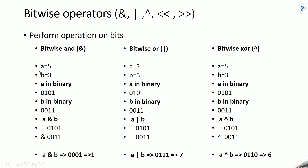For bitwise AND, we have two variables: a equal to 5 and b equal to 3. In binary, a is 101 and b is 011. If you perform a bitwise AND b, the result is 001, which is 1. In bitwise AND, if both bits are 1 the result is 1, otherwise it is 0.